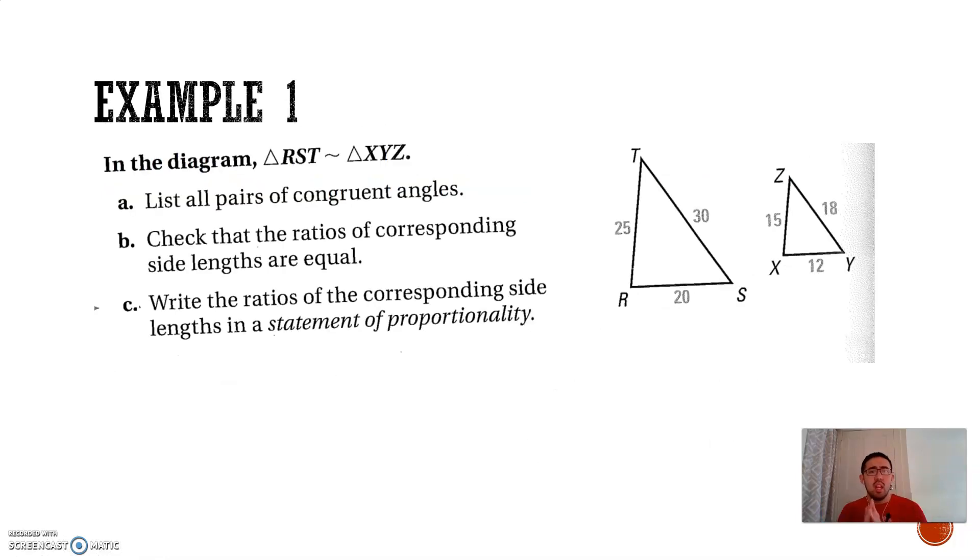If we take a look at an example, what are the pairs of congruent angles here? If triangle RST and triangle XYZ are similar, then angle R and angle X, angle S and angle Y, and angle T and angle Z are the congruent angles.